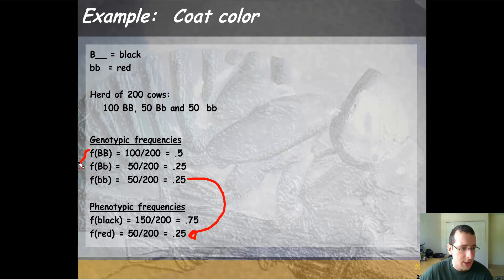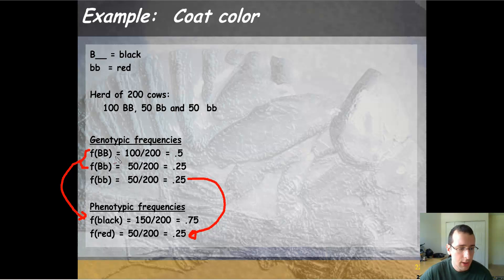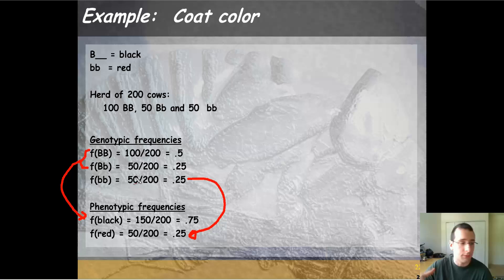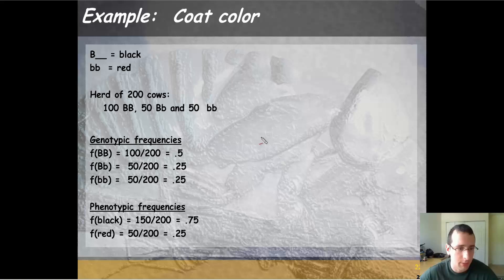However, both the homozygous dominant and heterozygous will look dominant, because this is an example of complete dominance. Therefore, the phenotype frequency for black will be a combination of both those genotypes. If you were given only the phenotype frequency, it would be impossible to differentiate between the two, because at the level of seeing the organism, you can't tell what the genotype is, since both will look dominant.